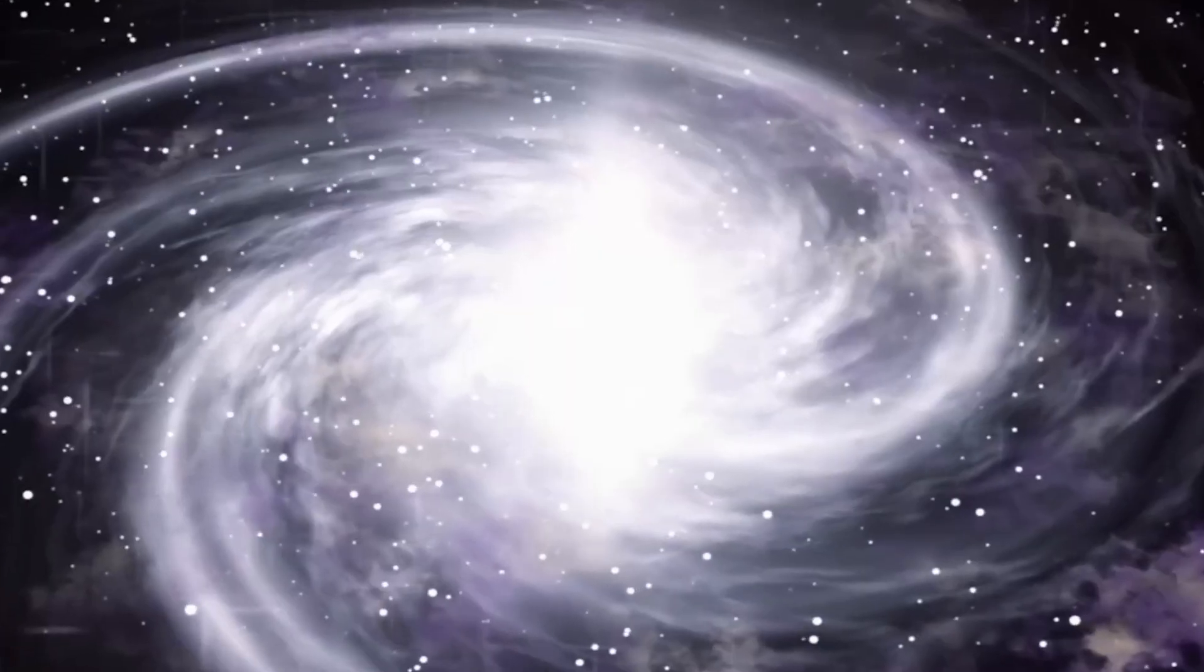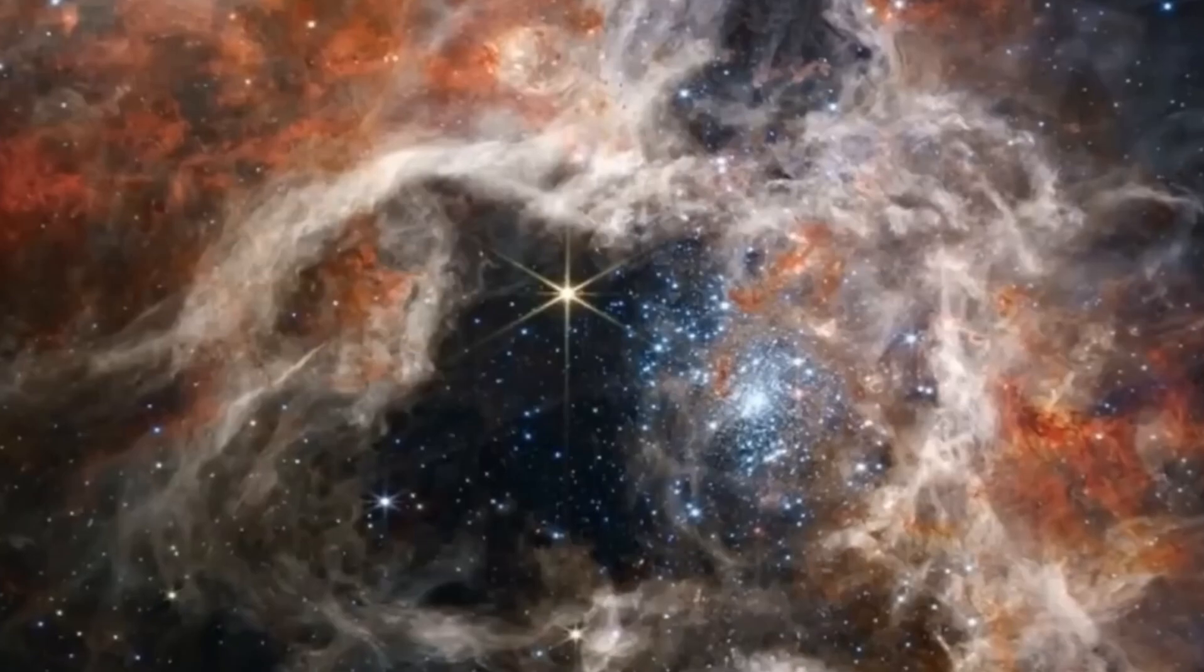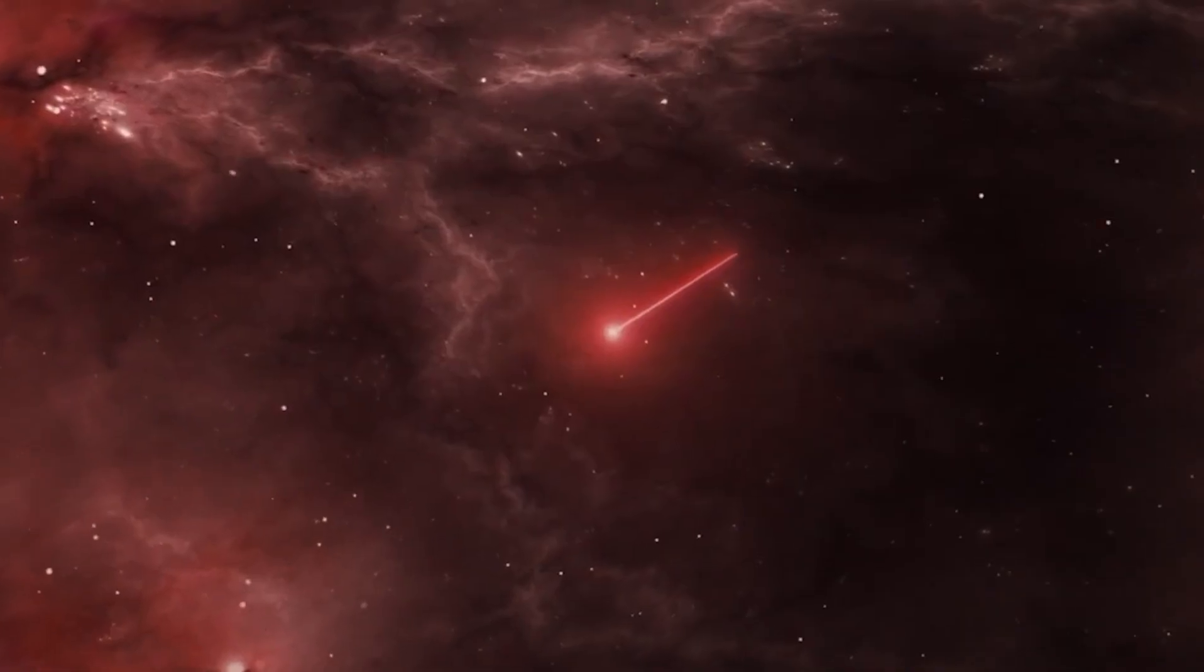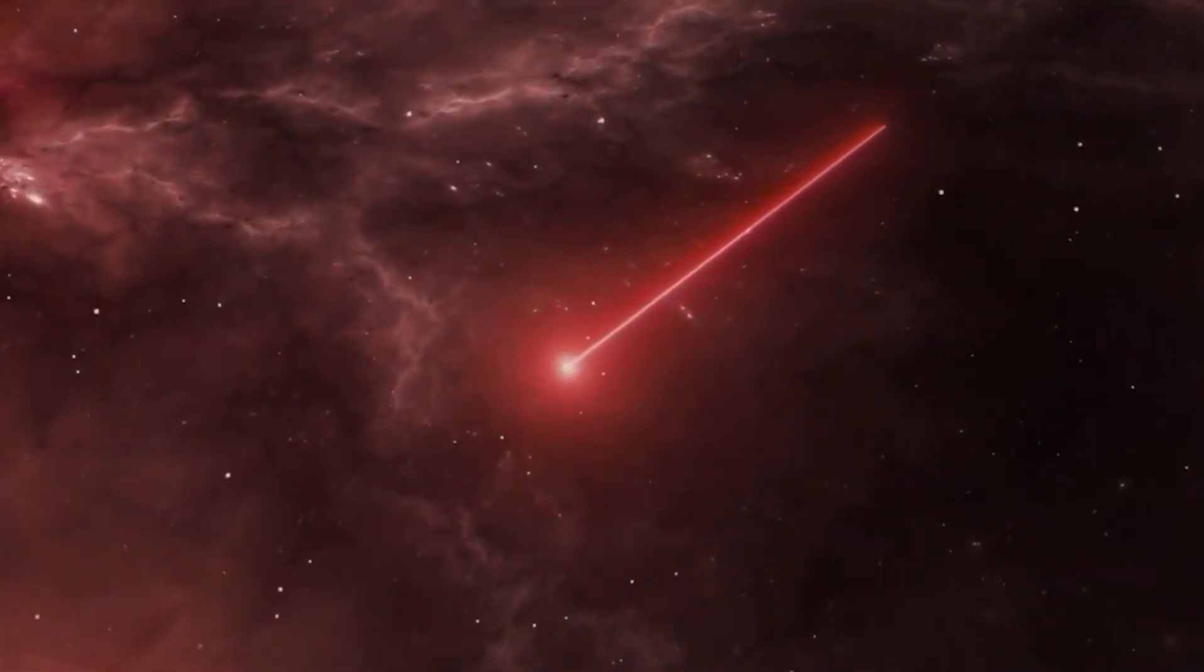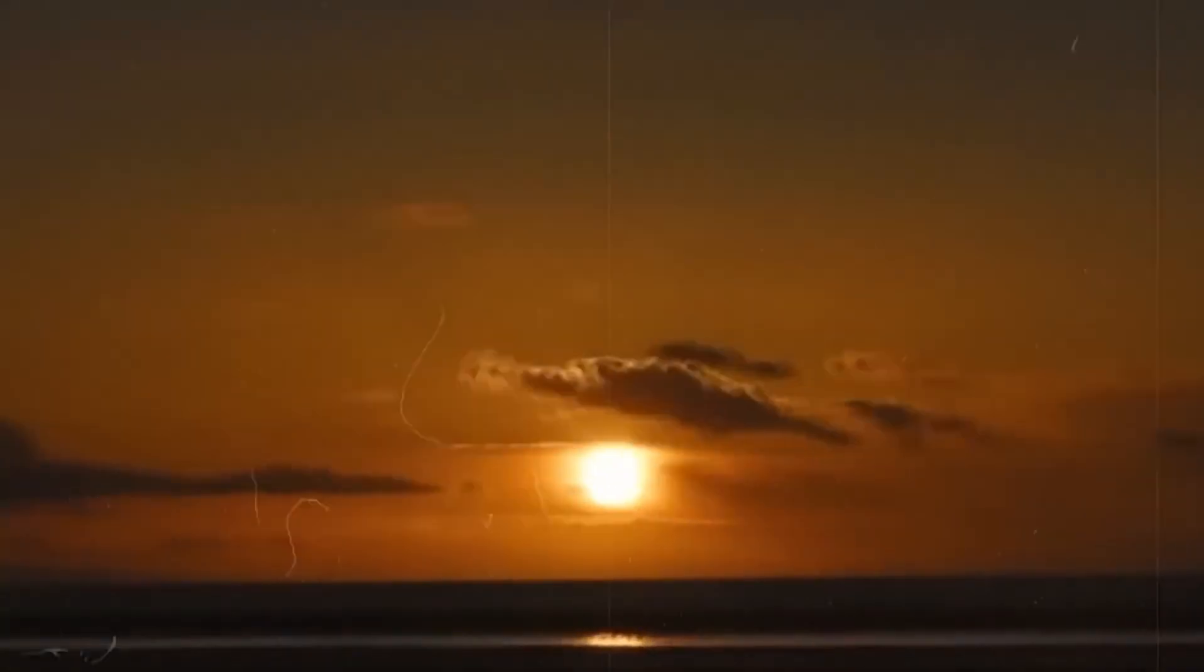The universe is commonly compared in astronomy texts to a rising cake with raisins standing in for galaxies. Like the Big Bang, the expanding cake causes the raisins to spread apart and leave no one point of expansion. However, unlike the universe, which may theoretically go on forever, a cake has a boundary. The analogy could not be more flawed.